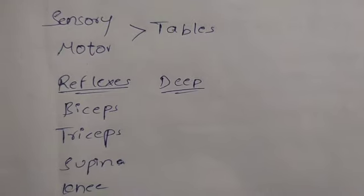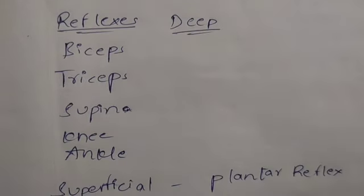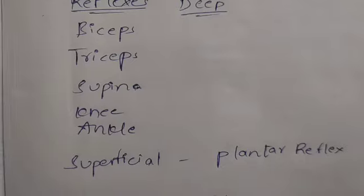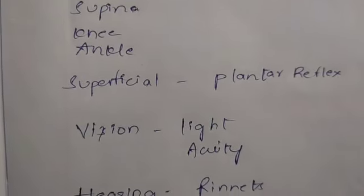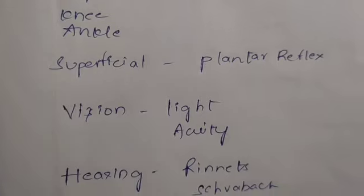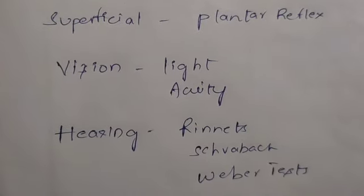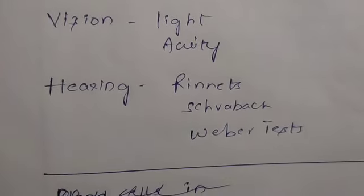Sensory and motor tables, like sensory tracts. Deep reflexes like biceps, triceps, supinator, knee and ankle. Superficial plantar reflexes. Vision, light like pupillary dilation, acuity.